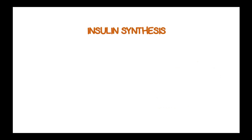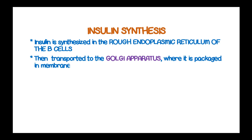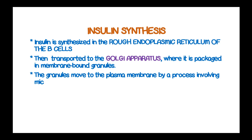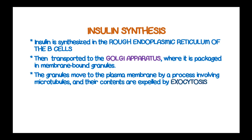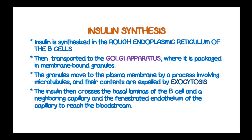Insulin is synthesized in the rough endoplasmic reticulum of the beta cells, then transported into the Golgi apparatus where it is packaged in membrane-bound granules. The granules move to the plasma membrane by a process involving microtubules, and their contents are expelled by a process known as exocytosis. The insulin then crosses the basal lamina of the beta cell and a neighboring capillary, and the fenestrated endothelium of the capillary, to enter the bloodstream.